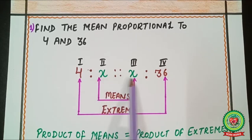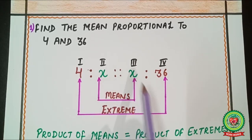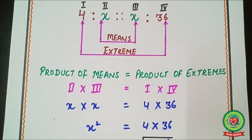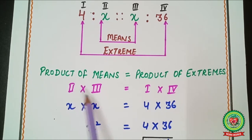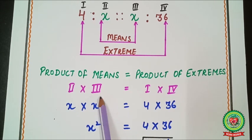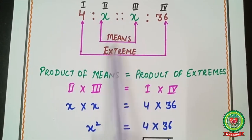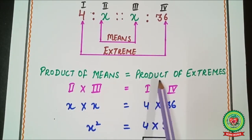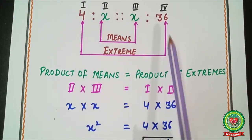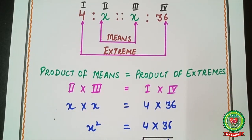Since we have to find the mean proportion, we let the mean proportion be x, so we write x and x in the middle positions. Now, product of means equals product of extremes, meaning second multiplied by third equals first multiplied by fourth. So x multiplied by x equals 4 multiplied by 36.